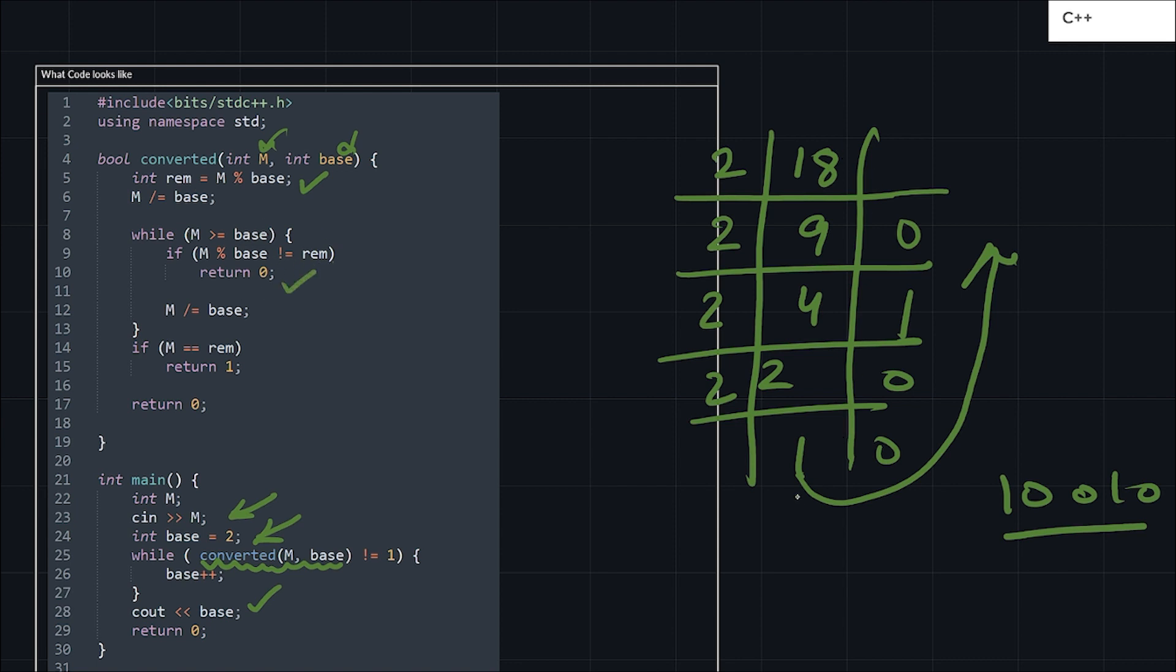Once I come out of this while loop I will check if my M equals remainder or not. If it is equal then I'll return 1, meaning all the digits are same, else I'll return 0. It looks somewhat typical but just try to dry run this code, you will get everything. This brute force approach will also work in Infosys exam. I hope you got this approach and this question. Thank you.